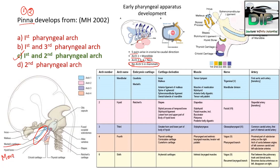This is Meckel's cartilage — 'M' for mono, meaning one, so Meckel's cartilage arises from the first pharyngeal arc. This is Reichert's cartilage — 'R' has a shape like two, so Reichert's cartilage arises from the second pharyngeal arc.